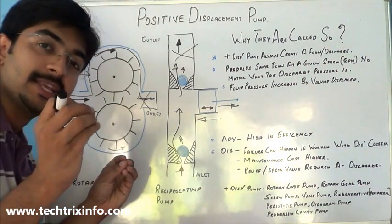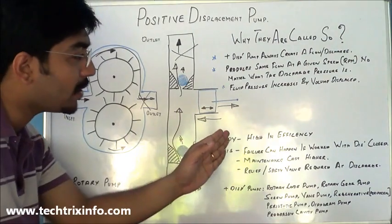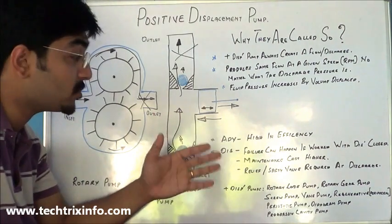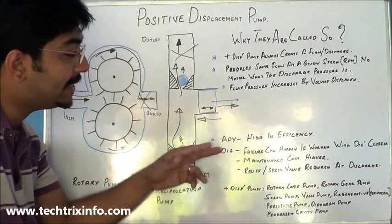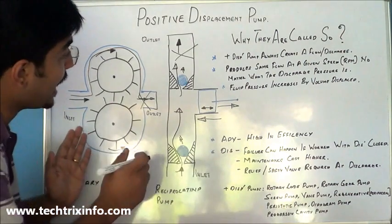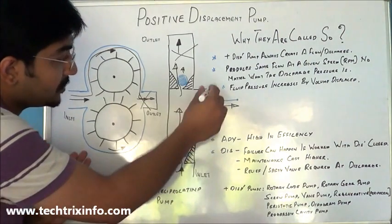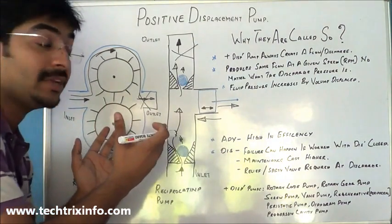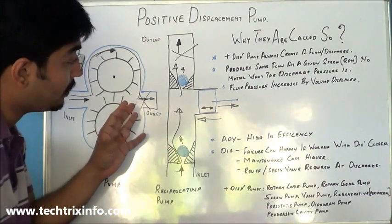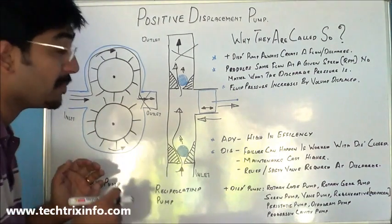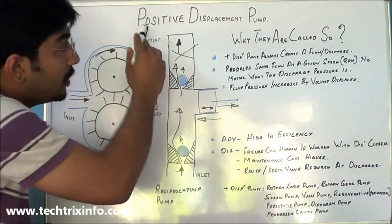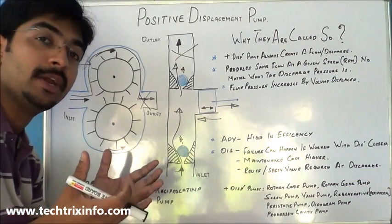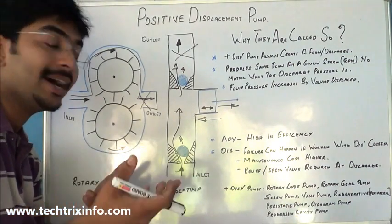The advantage of a positive displacement pump is that it works at a very high efficiency. The disadvantage is that failure can happen if the discharge is closed and there is no safety valve or relief valve. Also, the maintenance cost of a positive displacement pump is much higher compared to other types of pumps.